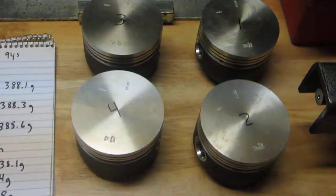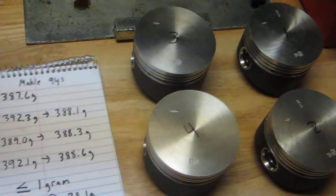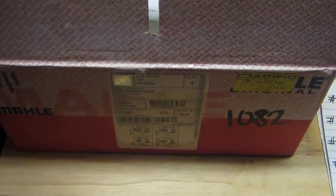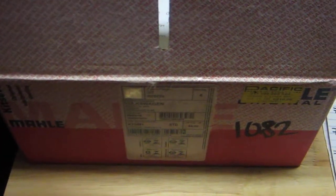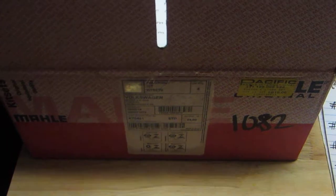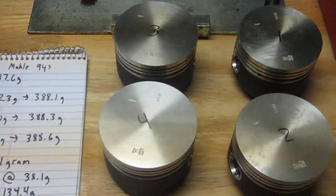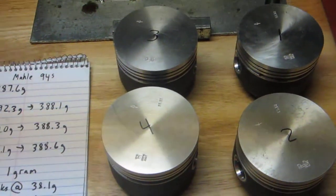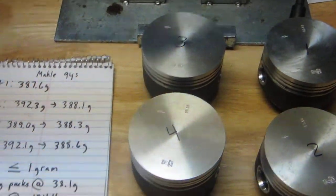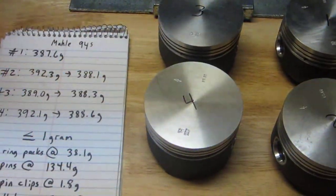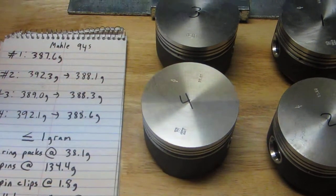So there's the box they came in, the CB Performance 1082. They're Mahle 94 millimeter B pistons made for 82 millimeter and up strokes. They came with about a four and a half gram difference between the heaviest piston and the lightest. I undertook some grinding on these forged aluminum pistons.